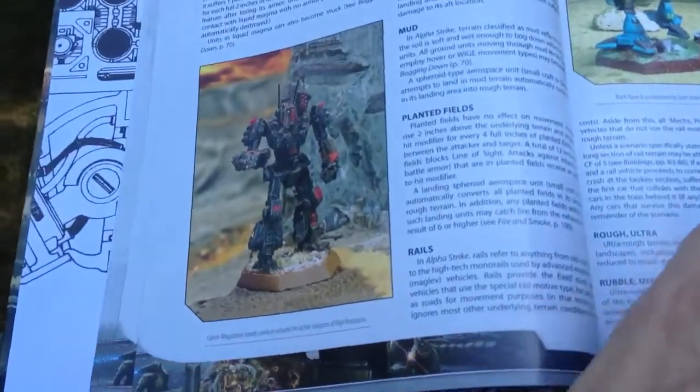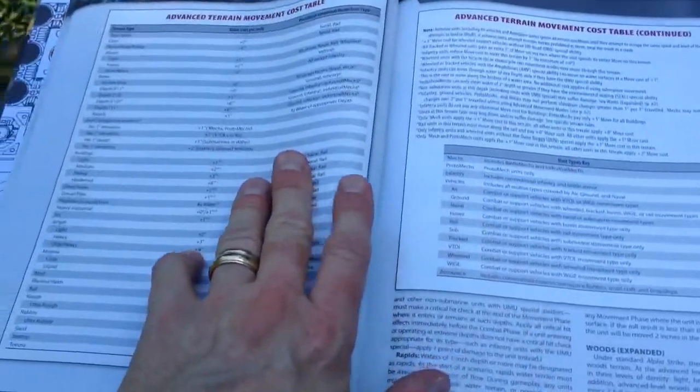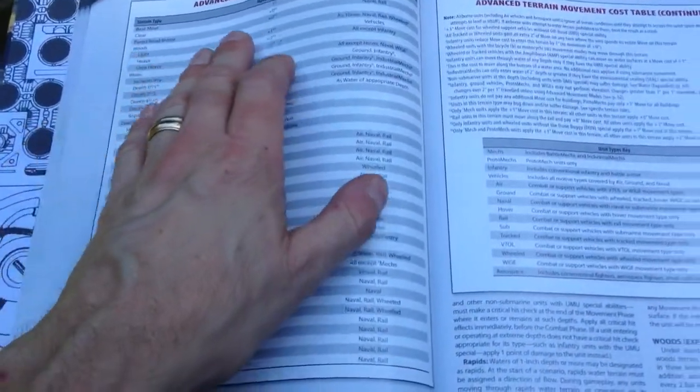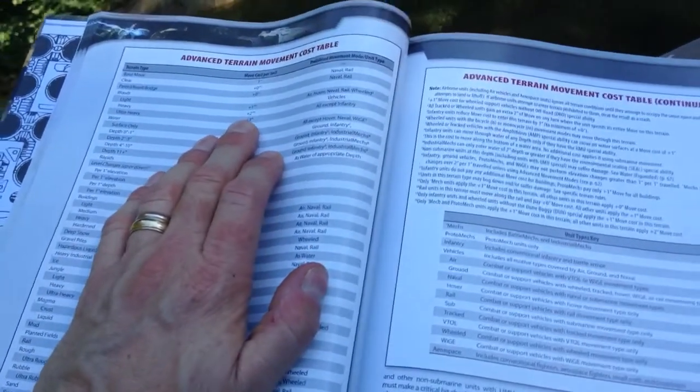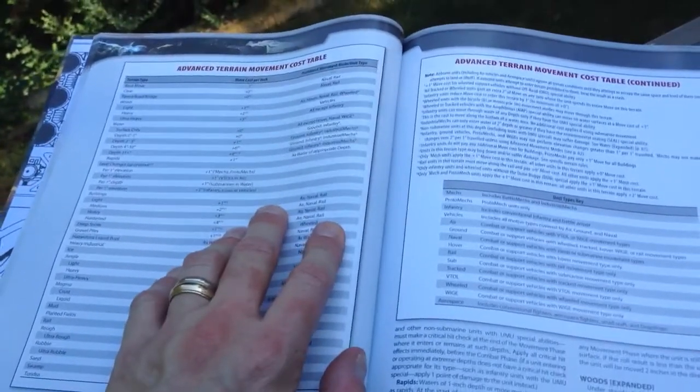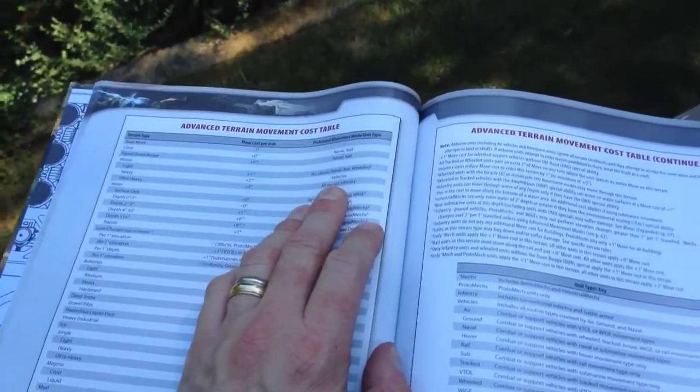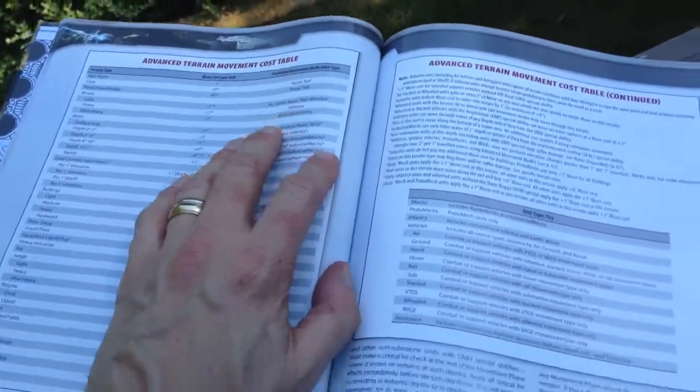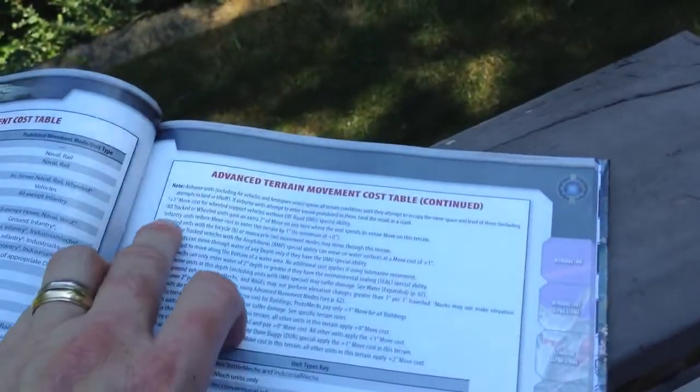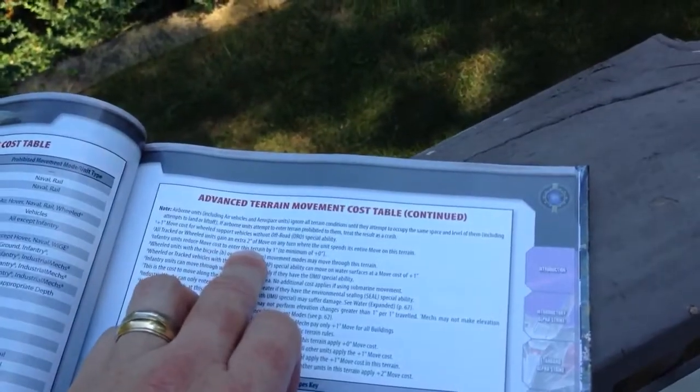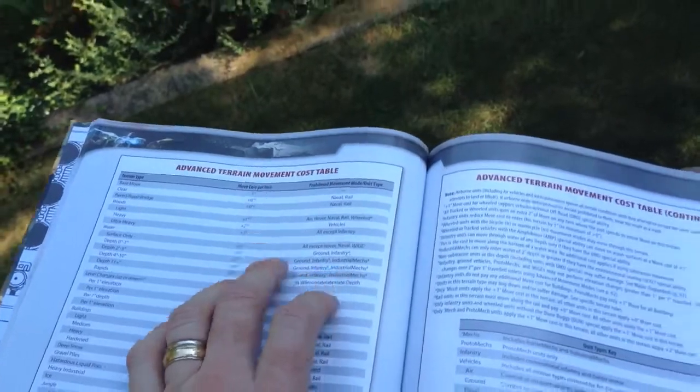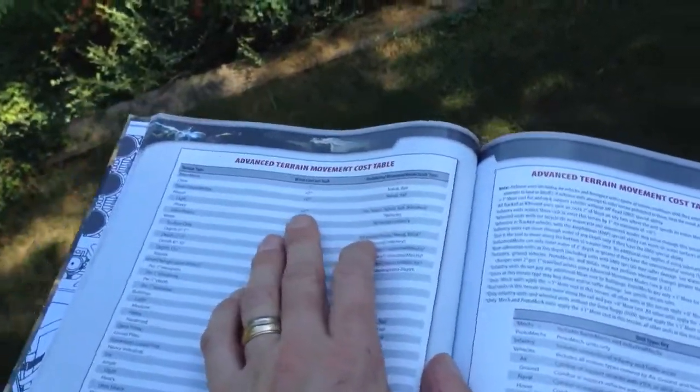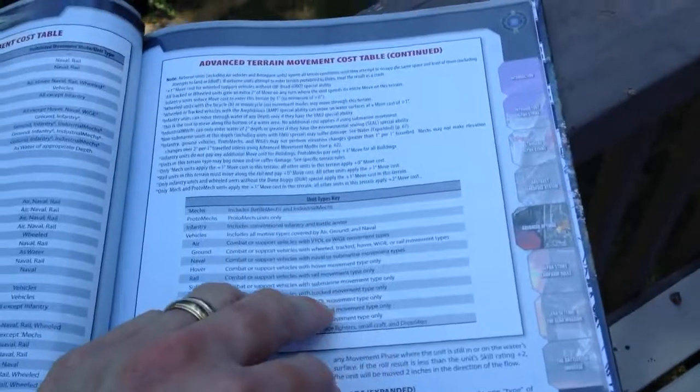This is a really good paint job here. So, advanced terrain movement. Woods, instead of just being straight, it's light woods would be plus one inch. Heavy would be plus two. And ultra-heavy woods would be plus three. In fact, no one can go through that except for infantry. That's interesting. Infantry units reduce move cost to enter this terrain by one inch. So, they aren't actually charged for light woods. That's cool. It just gets to more details.